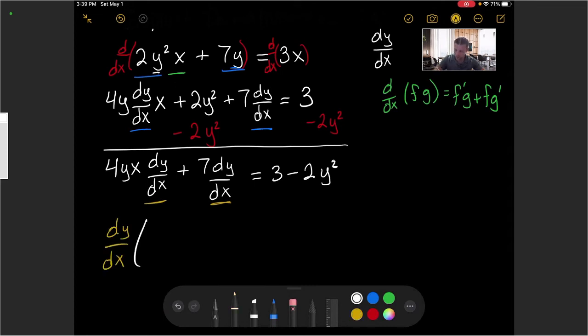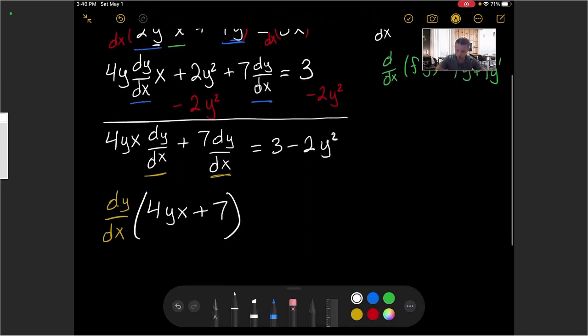And what's left is the 4yx + 7. And that's set equal to, again, the non-derivative terms 3 - 2y².